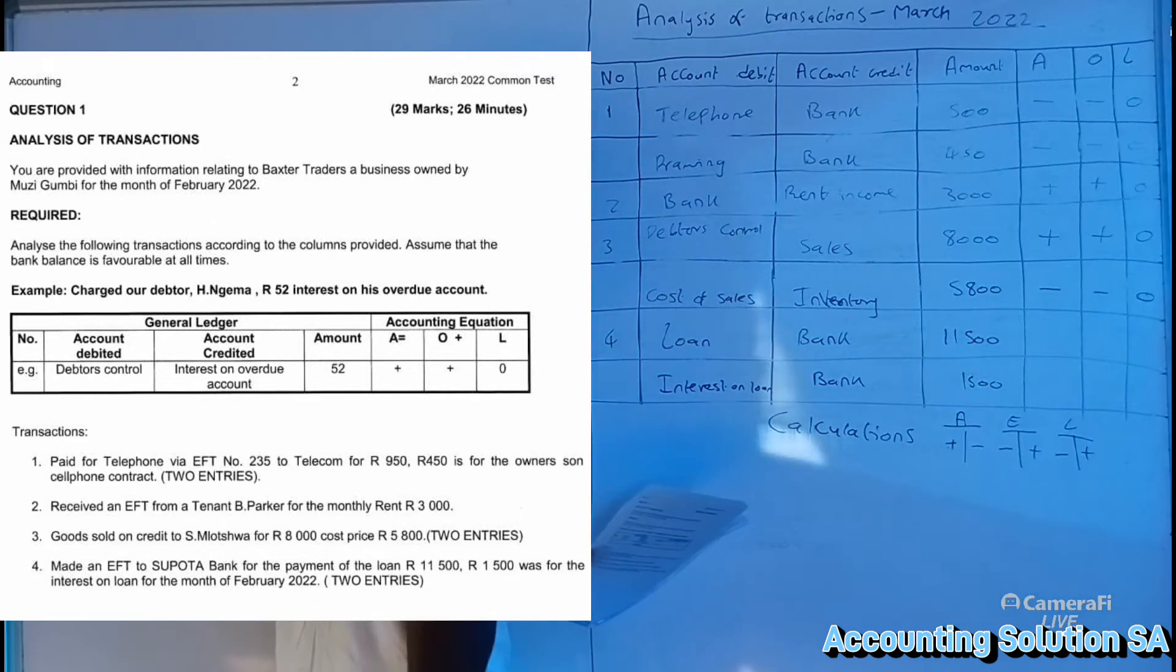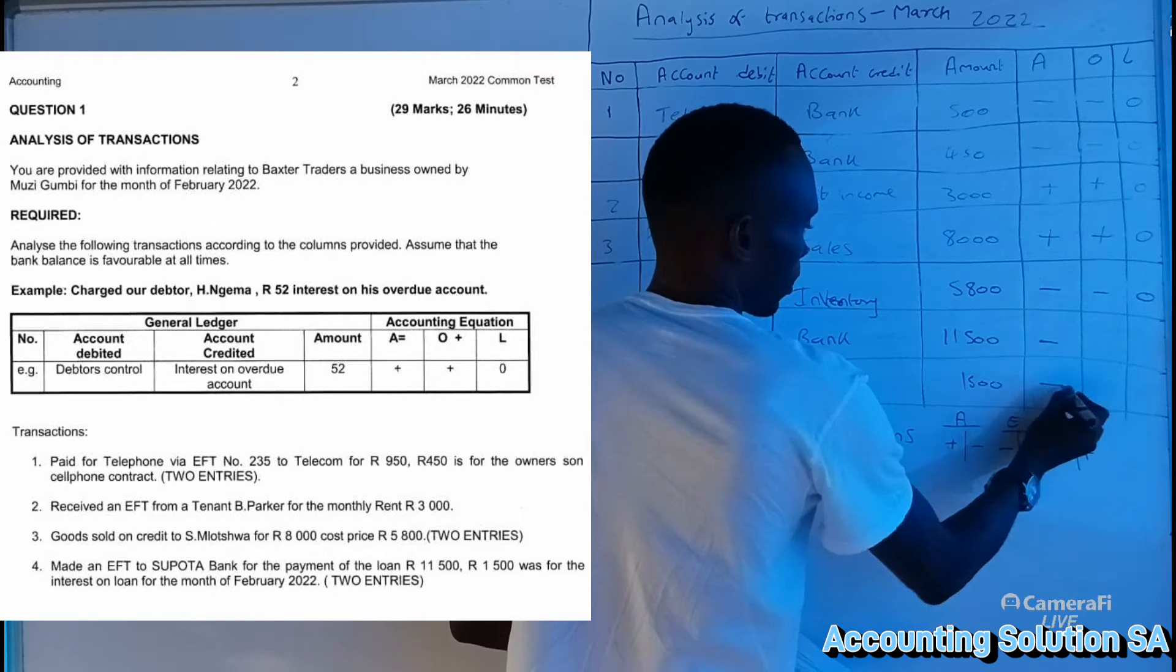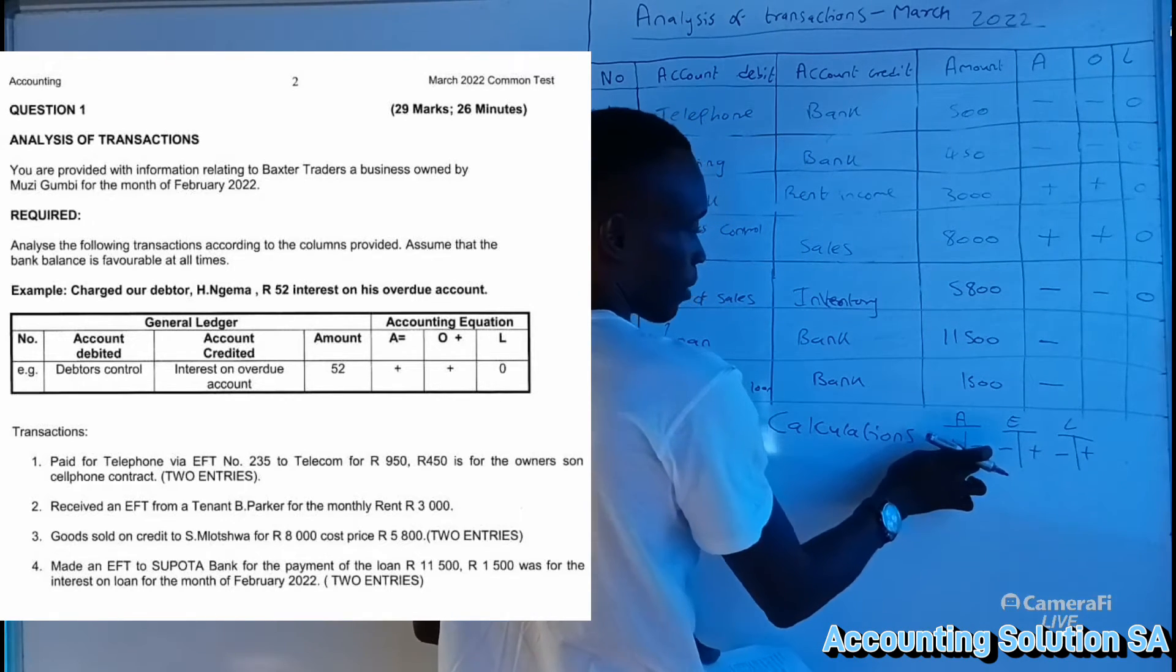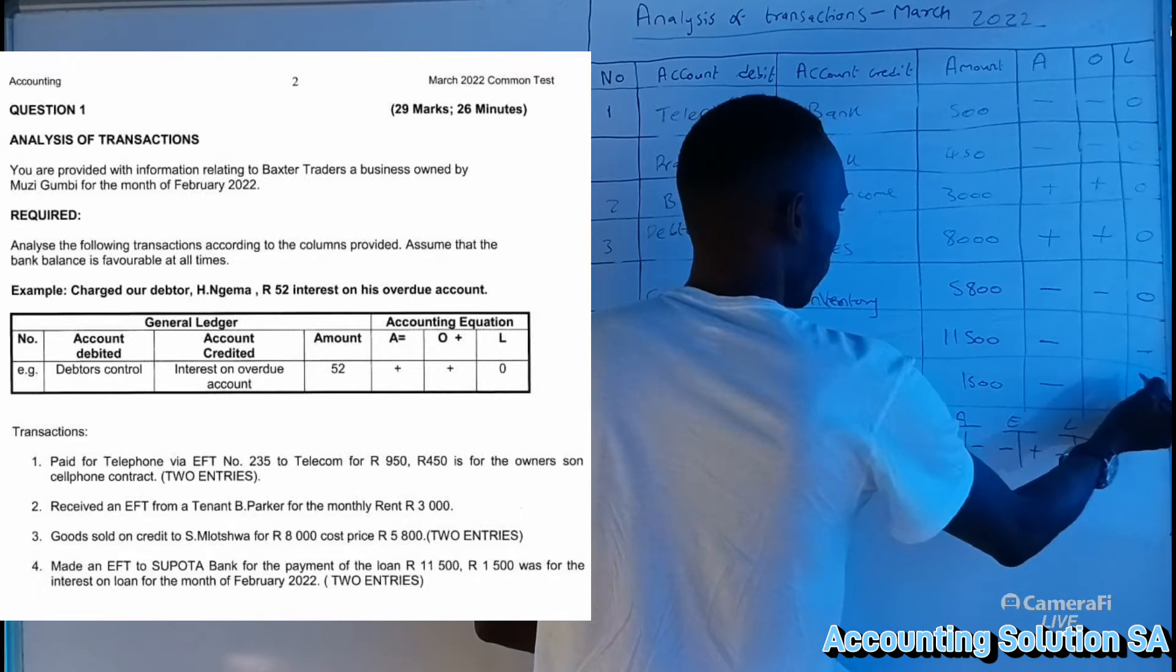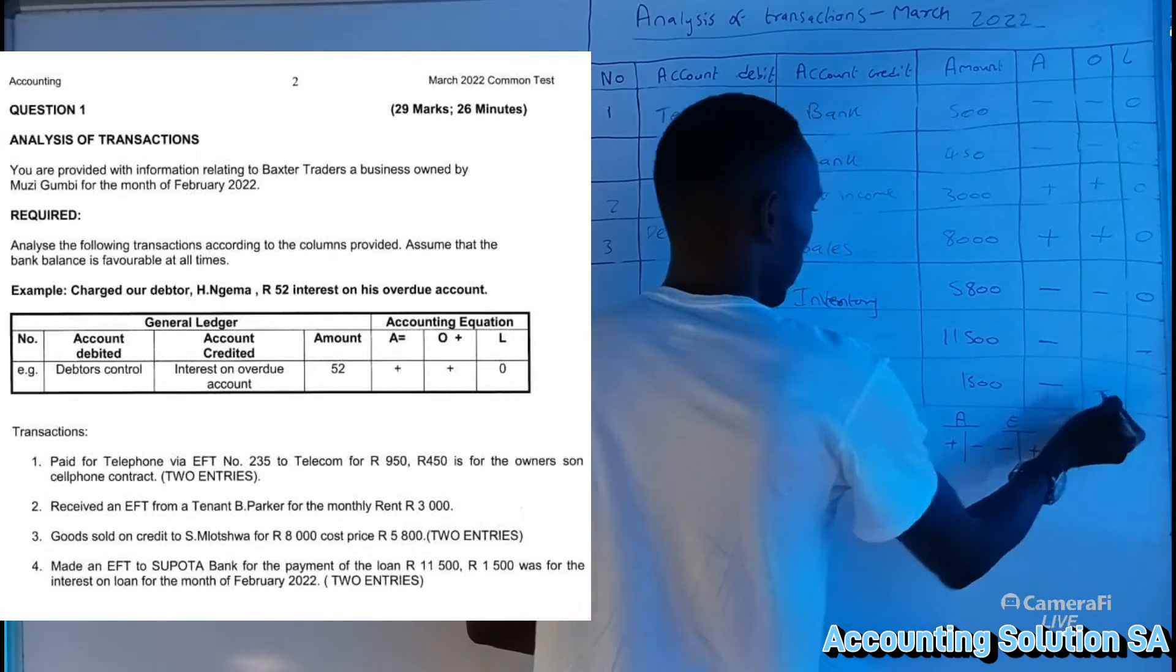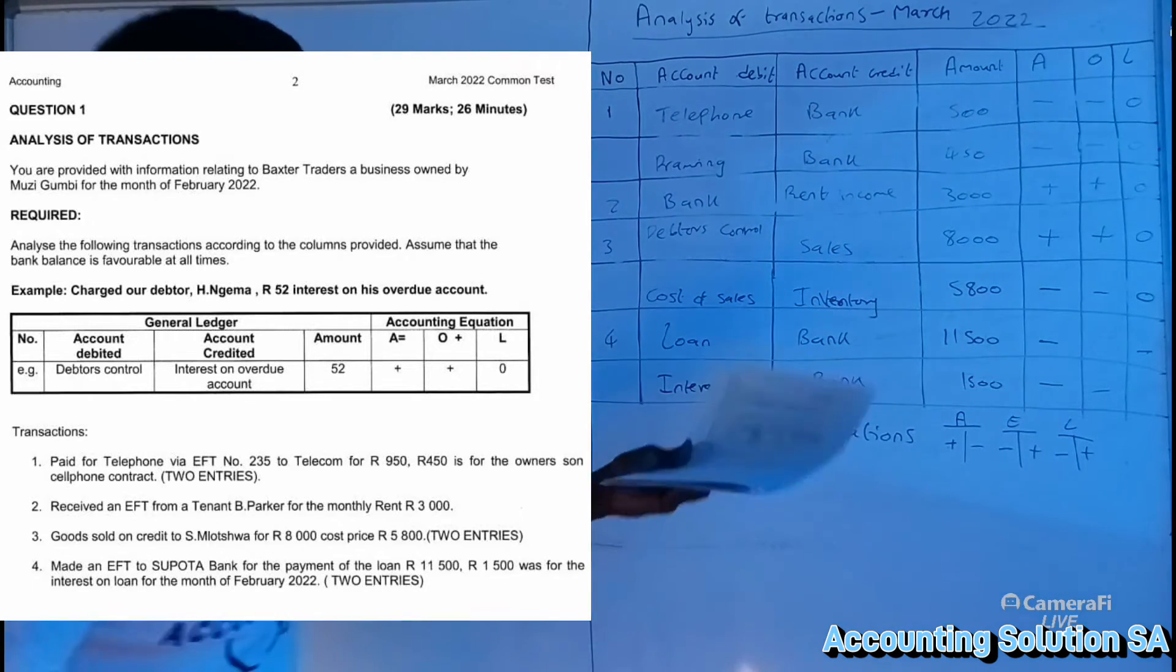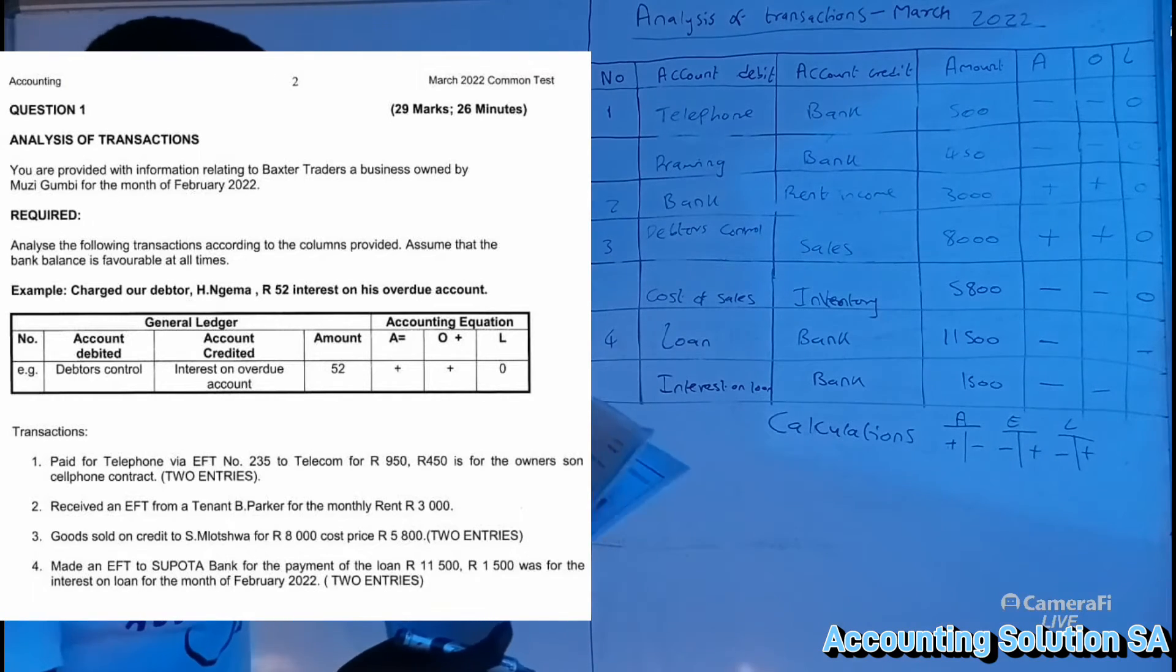Then amount is going to be 11,000 on top and 1,500 on the bottom. Very simple, which means that in this case a bank is going to be minus minus because it's an asset, money goes out, liability has been reduced. Apology, this one, interest on loan is going to reduce equity. It's an expense.